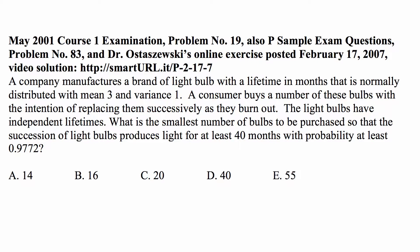A company manufactures a brand of light bulb with a lifetime in months that is normally distributed with mean 3 and variance 1. A consumer buys a number of these bulbs with the intention of replacing them successively as they burn out. The light bulbs have independent lifetimes.